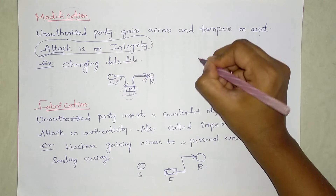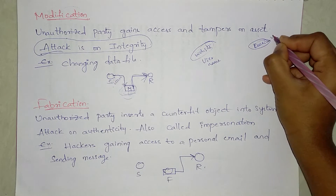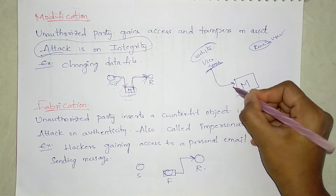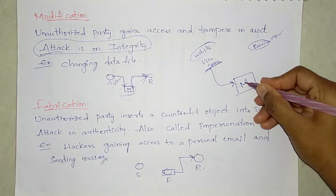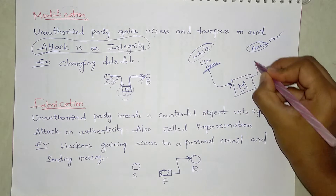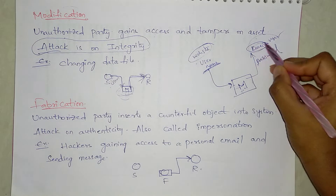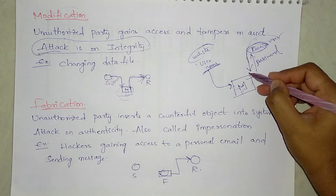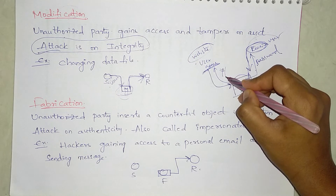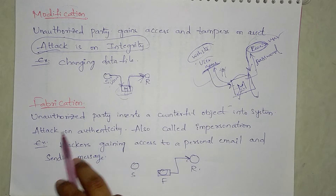For example, a website is asking for your username. The modifier intercepts this and instead tells the website it is asking for a password. The user then sends their password, which is taken by the attacker, and the same data goes to the website too. The website then says 'incorrect username' — that is the capability of the hacker. That is how modification works.